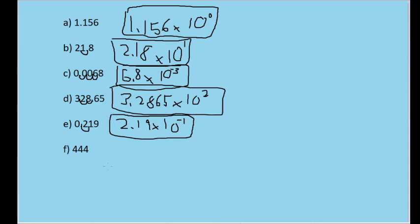For 444, we change this to 4.44, effectively moving the decimal place twice to the left. So we multiply this by 10 to the second power to even this value out.